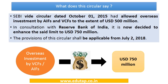SEBI, vide its earlier circular dated 1st October 2015, had allowed overseas investment by AIFs and VCFs to the extent of US dollar 500 million. Now, in consultation with the RBI, it has been decided to enhance the said limit to US dollar 750 million. Since foreign exchange is involved, RBI's consultation was necessary. The revised limit is applicable from July 2nd, 2018.